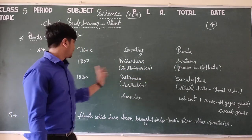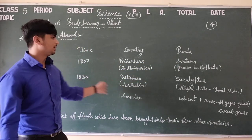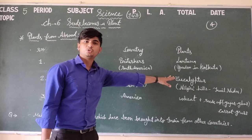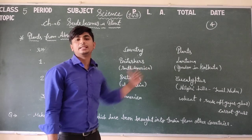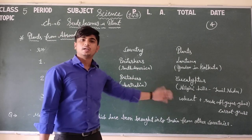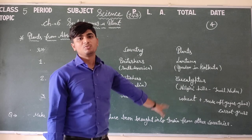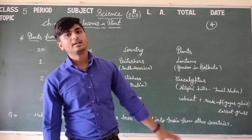The Britishers in 1830 brought Eucalyptus, and in 1950 America, India imported wheat.